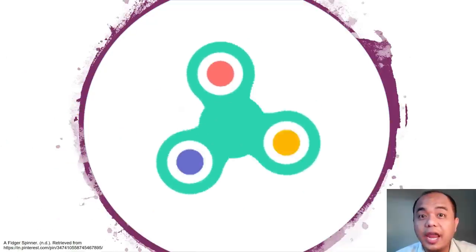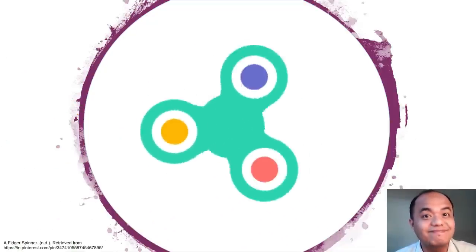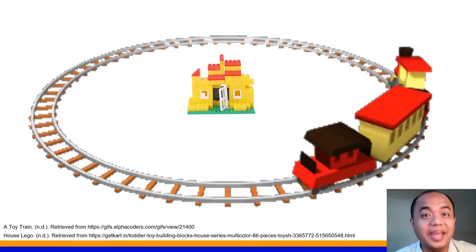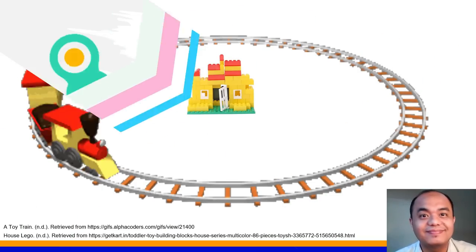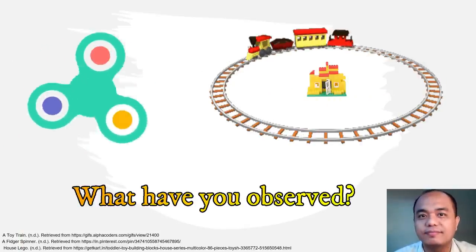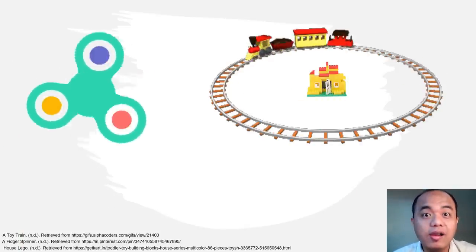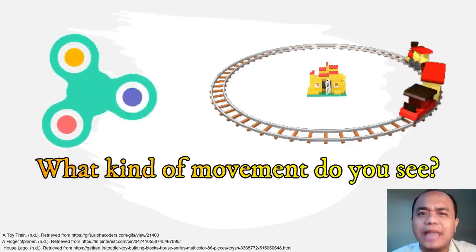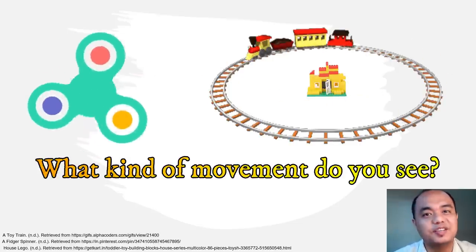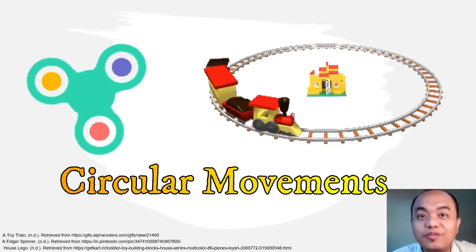I hope you will follow the same, especially when you are deciding to use illustrations or pictures from the internet in submitting your output. Have you tried playing a fidget spinner? How about this toy train? While playing these toys, what have you observed? They are moving! And what kind of movement do you see? Circular movements!